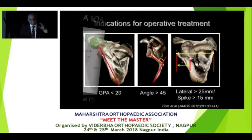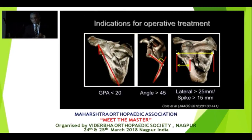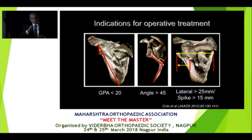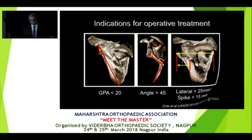If you want to remember one particular slide from this entire talk, this is it. Your glenopolar angle should be less than 20 degrees. The deformity of the body of the scapula should be less than 45 degrees. And the lateral translation of the spike should be 15 to 25 millimeters. If these criteria are present, there is a very good chance that your patient is going to require surgical intervention.